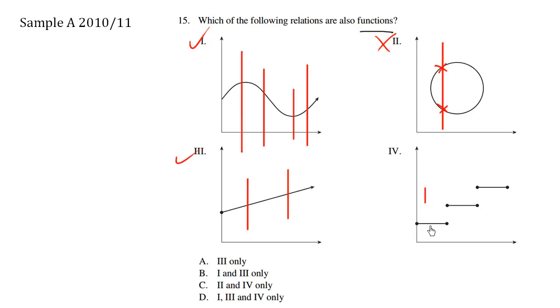Finally, choice number four. It looks like it passes almost everywhere. However, if we choose the point cutting through right here, it fails the vertical line test. So this here is not a function.